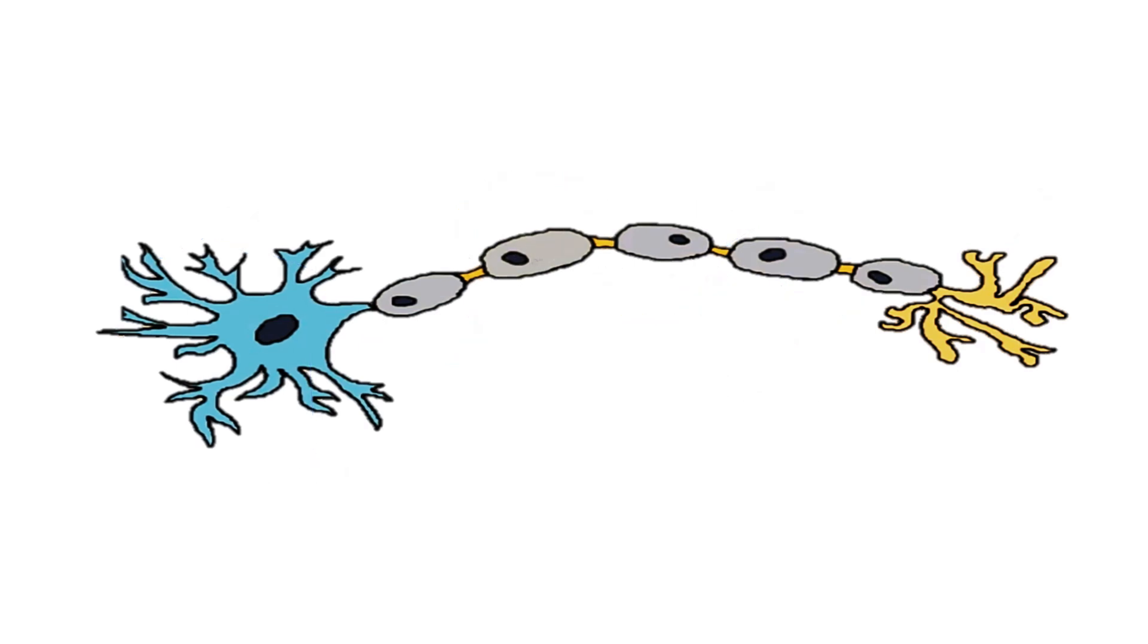If we remove that sheath, the electrical impulse leaks through the axonal membrane and dissipates, which means it can't go to where it needs to.